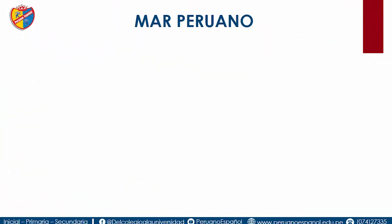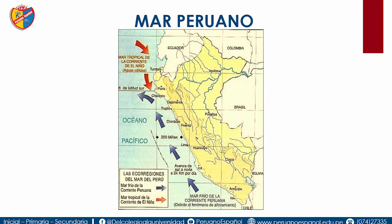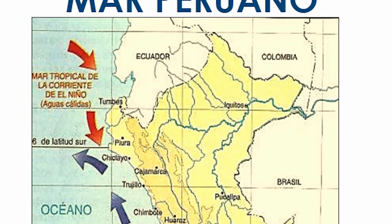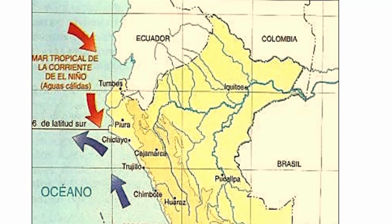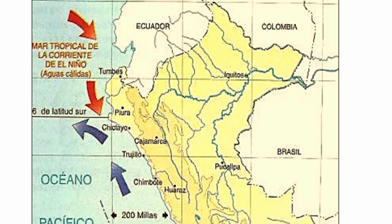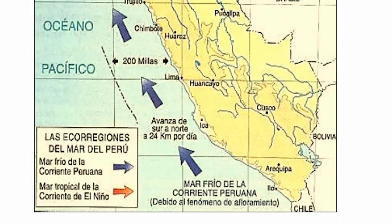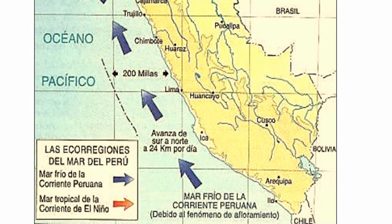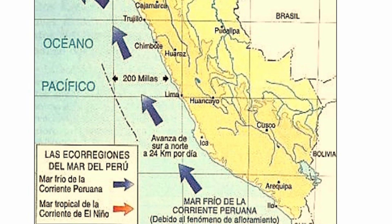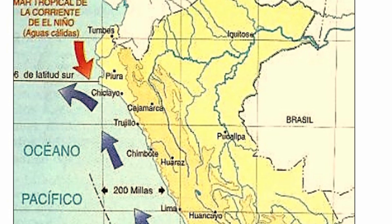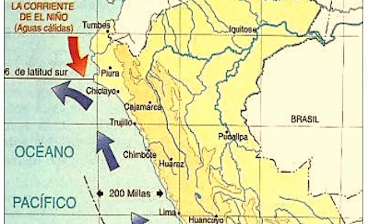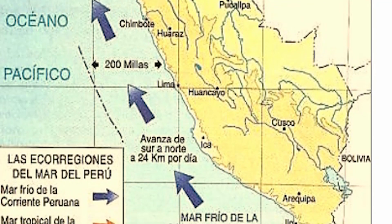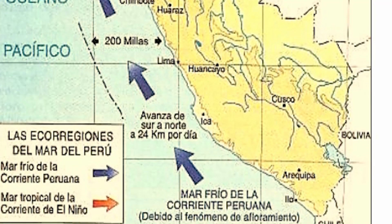Empezamos con el mar peruano. ¿Cuáles son los límites del mar peruano? Se le llama el paralelo geográfico a Boca de Capones, que está en Tumbes, ese es el límite norte del mar peruano. Por el sur, el paralelo geográfico al hito número 1, establecido con el fallo del hallo. El este del mar peruano se le llama las playas del litoral, y el oeste es una línea paralela al litoral que mide 200 millas con 370 kilómetros.